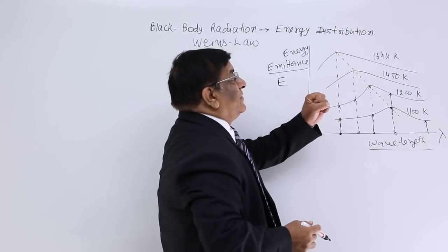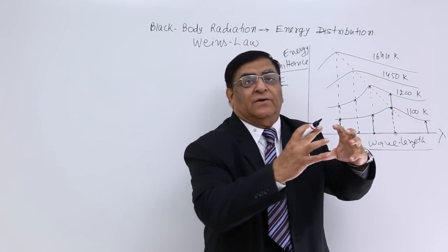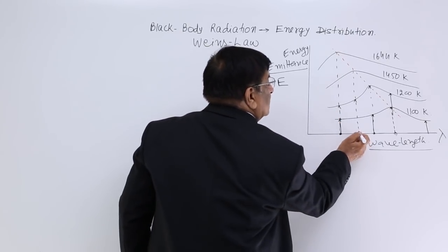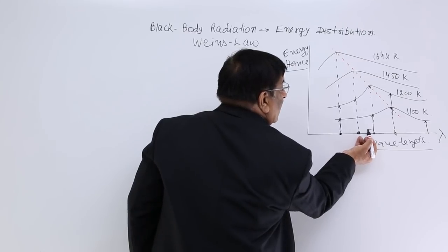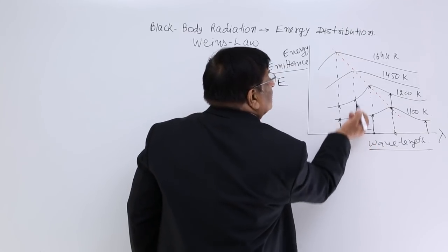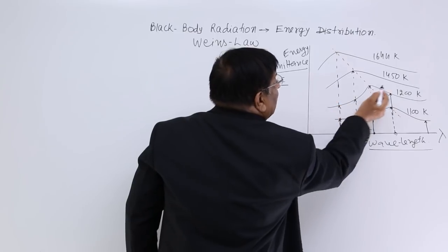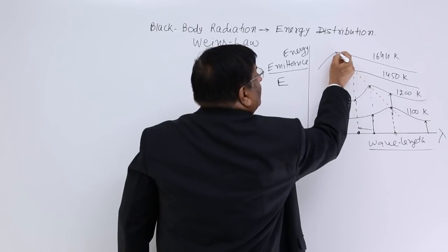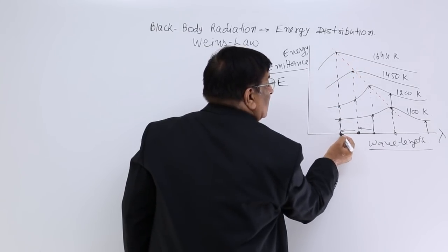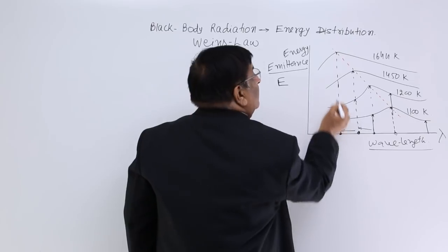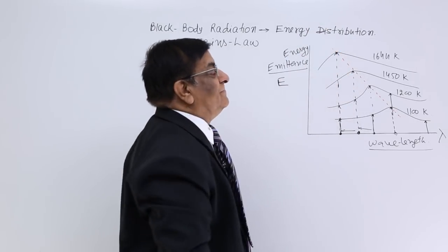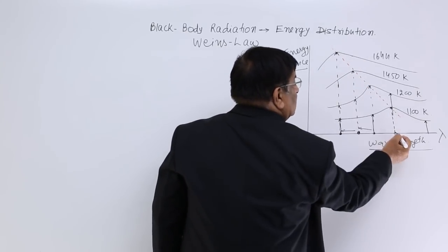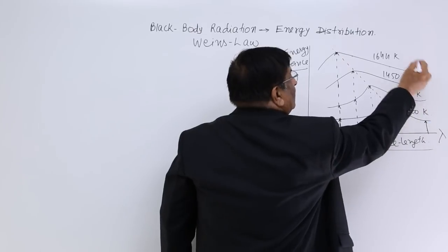Again we heat that body to 1450 K. Again we check which lambda has got how much energy, and we find the maximum energy is with a particular lambda — again, less than before. As we raise the temperature further, this lower value of lambda now has higher energy. So different lambdas carry so much energy each, and we see that energy is distributed in the radiation of different wavelengths.